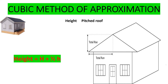For the pitched roof, we take the external length and the external width. For our height, we measure from the base up to the wall plate — that is H. Then on the rise of the roof, this is going to be our small h.